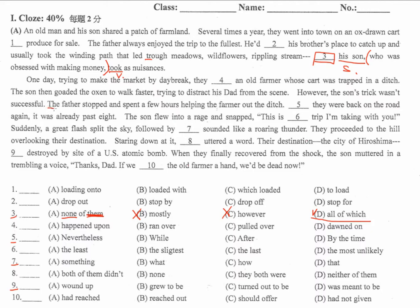第五題從 the father 這邊開始。The father stopped and spent a few hours helping the farmer out of the ditch. 因為他兒子一直不要讓他爸爸停下來，結果他爸爸停下來，而且還花了幾個鐘頭。所以要用 By the time 他們回到路上繼續出發，那個時候 it was already past eight。